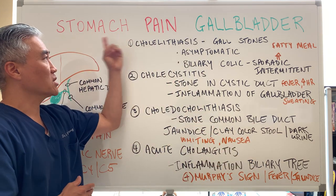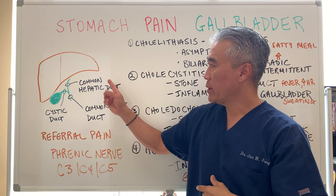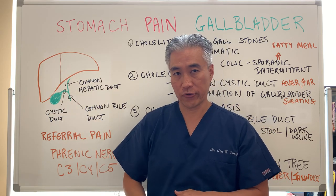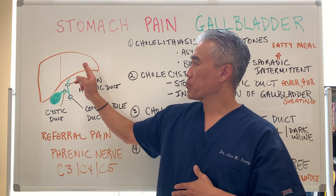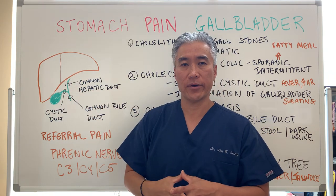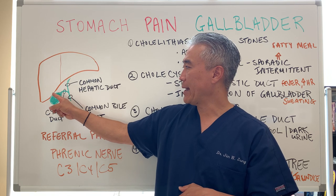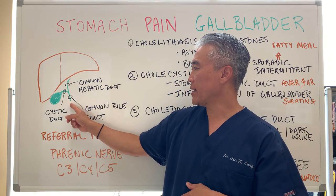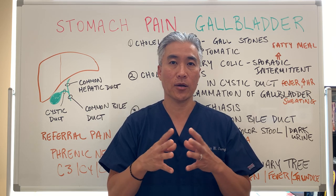Looking at stomach pain and the gallbladder, we first have to understand the anatomy. In my rudimentary drawing, we have the liver and sitting underneath the liver is the gallbladder in green. The liver produces bile, or bile acids, and it goes down and stores within the gallbladder. It comes down to the common hepatic duct, the gallbladder stores it, then contracts as necessary and pumps it through the cystic duct, coming down into the common bile duct.